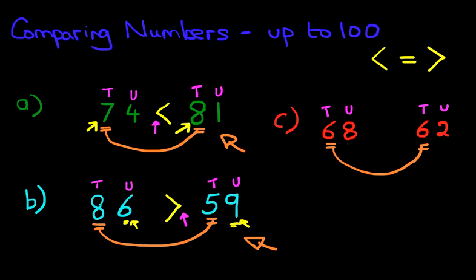Now the number 68 has got 8 units. 62 has got 2 units. So now we're comparing the units with the units. We're comparing 8 with 2. If we're comparing 8 and 2, 8 is greater than 2. So this is the symbol that has to go there. 68 is greater than 62. The arrow is pointing at the smaller number. So in this scenario, because the tens were the same, we had to go to the units. But we still came out with the right answer. 68 is greater than 62.